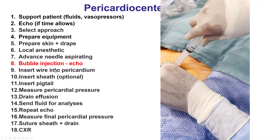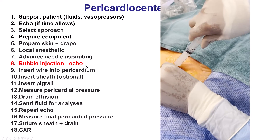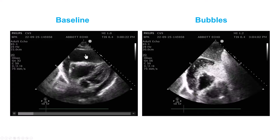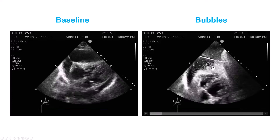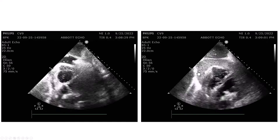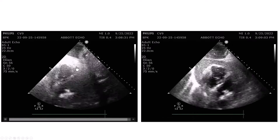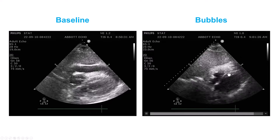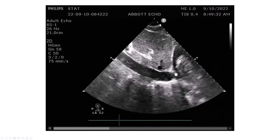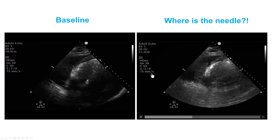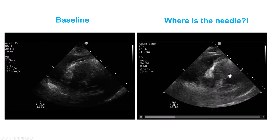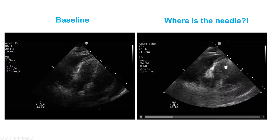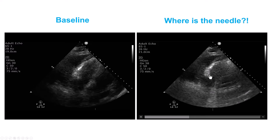Step number eight is to inject the bubbles. Looking under echo, we can see where the bubbles are going. When correct, the bubbles are clearly visible inside the pericardial space. The IVC may also appear dilated in cases of tamponade. If bubbles appear in the right ventricle rather than the pericardial space, the needle is in the wrong location and the wire and pigtail should not be advanced.